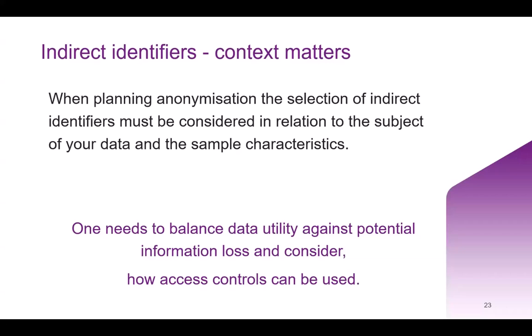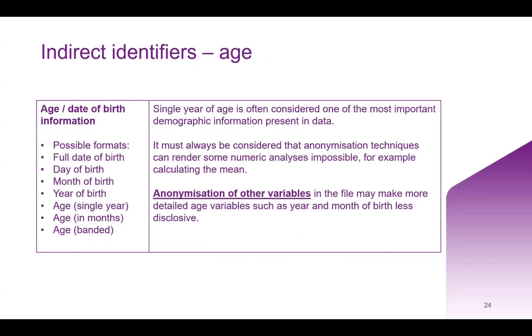Let's investigate some indirect identifiers in more detail. The key message here is that context is of utmost importance. When planning anonymization, the selection of indirect identifiers must be considered in relation to the subject of your data and the sample characteristics. The following is not an exhaustive list of indirect identifiers, but rather some of the most commonly found ones and some key considerations for each.